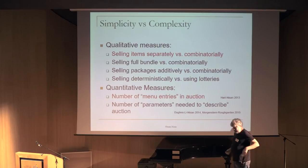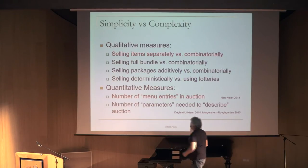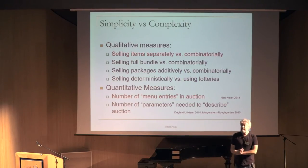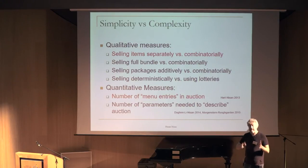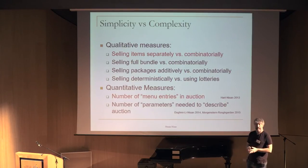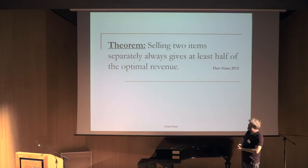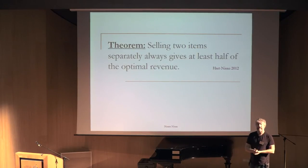What I want to do in the rest of the talk is give an example of each approach. First, what can you do if you insist on qualitative simplicity — basically selling items separately — and compare that to selling in an arbitrary way. Second, trying to quantify the number of menu entries and how that affects revenue.